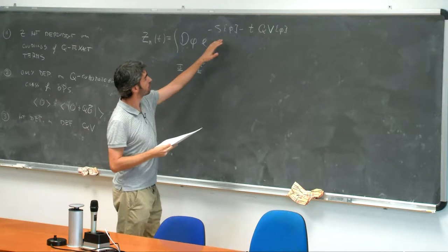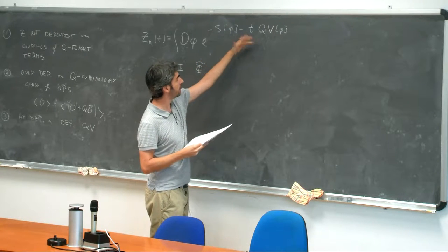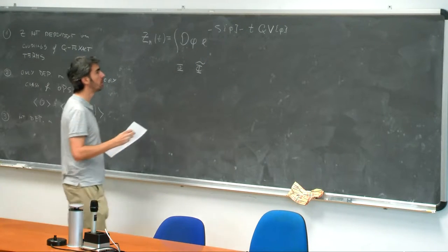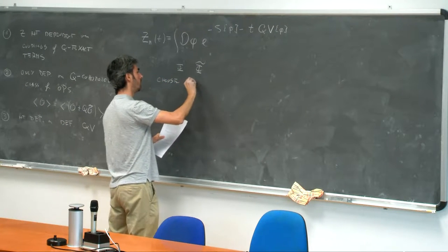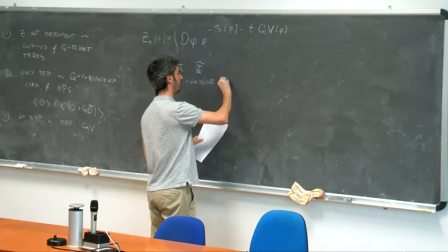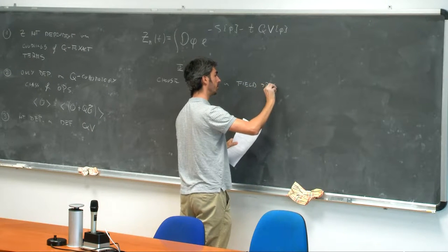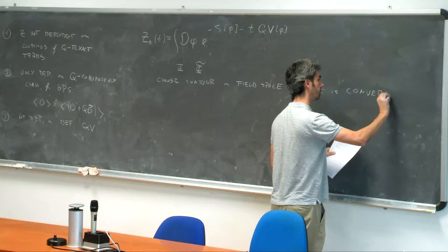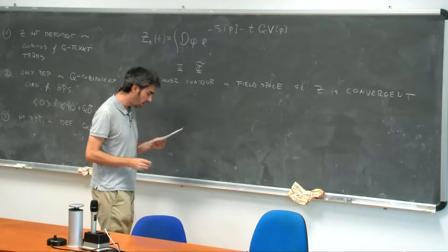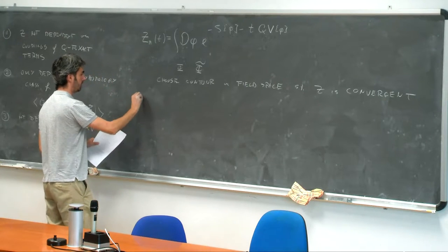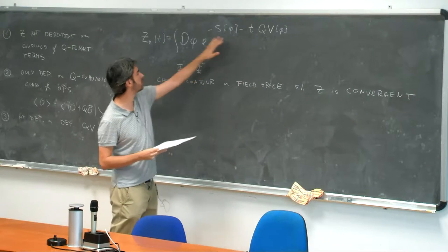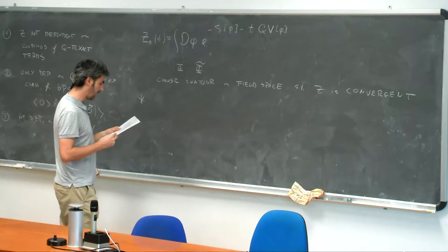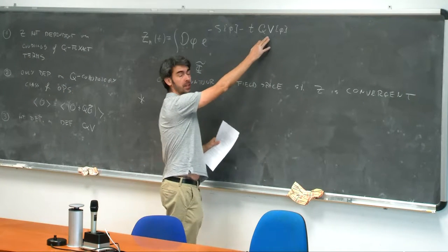We should choose a contour such that this integral is convergent when we go to infinity in field space, so that this is a well-defined object. Now that we have this deformation, we should choose a contour such that this object is convergent for any value of T. So choose contour in field space such that Z is convergent. Now let's go back to our integral — T equal to zero is the object that we want to compute, but since it does not depend on T, let's play with T.